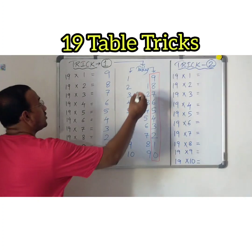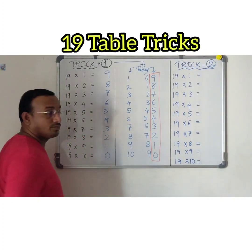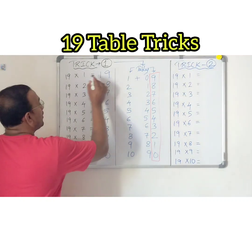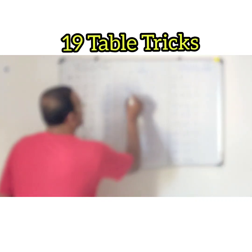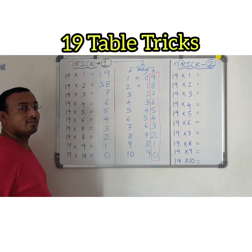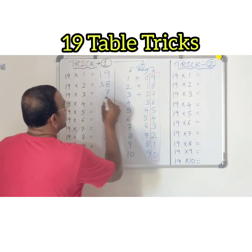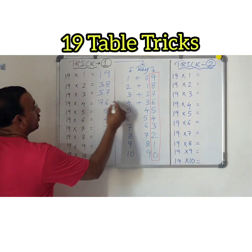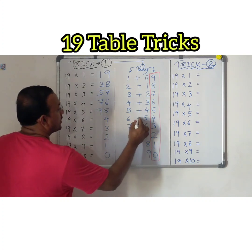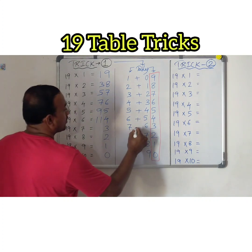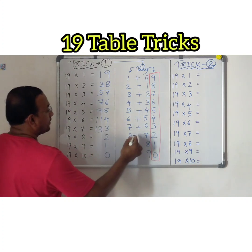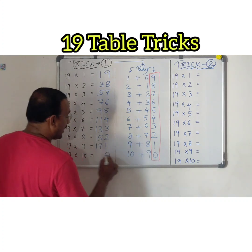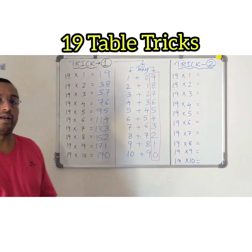Let's see. Since no tens digit is there for the first entry, I put 0, and add: 1 plus 0 equals 1, so 19 ones are 19. Then 2 plus 1 equals 3, so 19 twos are 38. Then 3 plus 2 equals 5, so 19 threes are 57. Continuing: 4 plus 3 equals 7; 5 plus 4 equals 9; 6 plus 5 equals 11; 7 plus 6 equals 13; 8 plus 7 equals 15; 9 plus 8 equals 17; and 10 plus 9 equals 19, so 19 tens are 190.